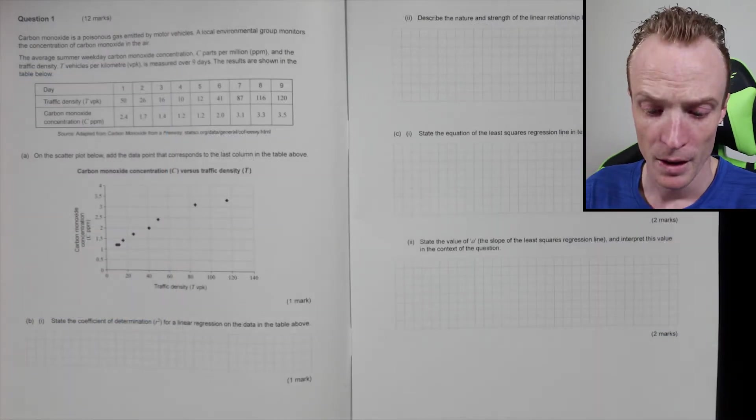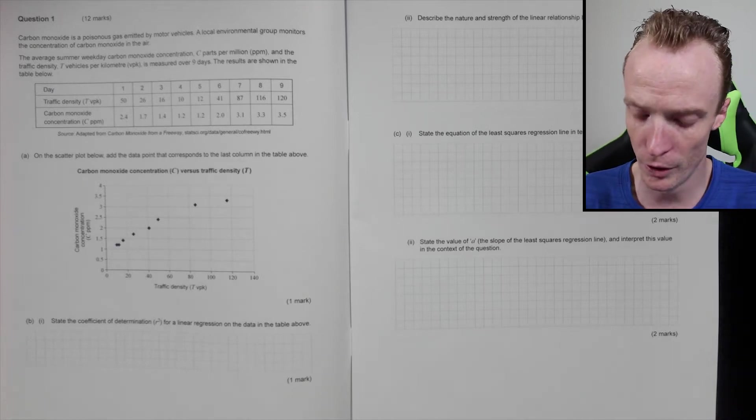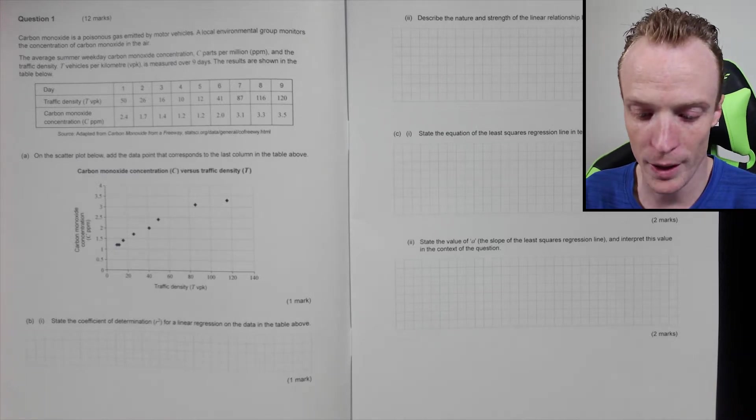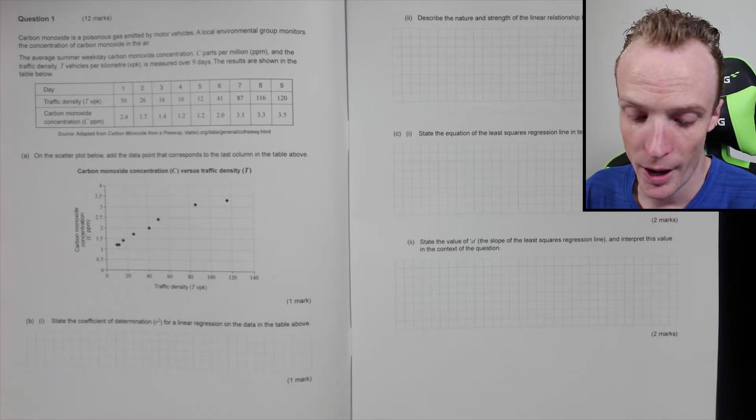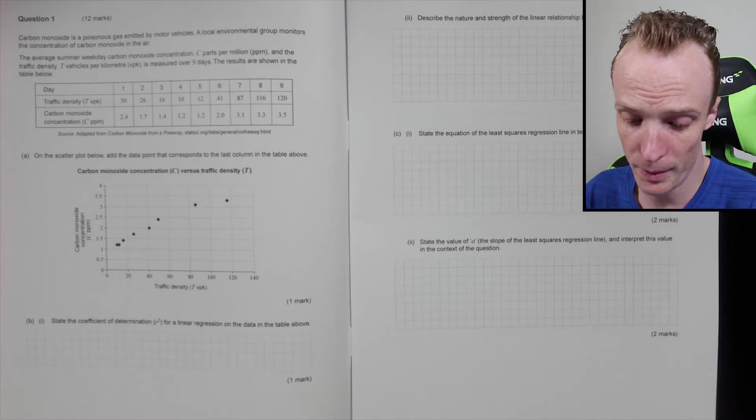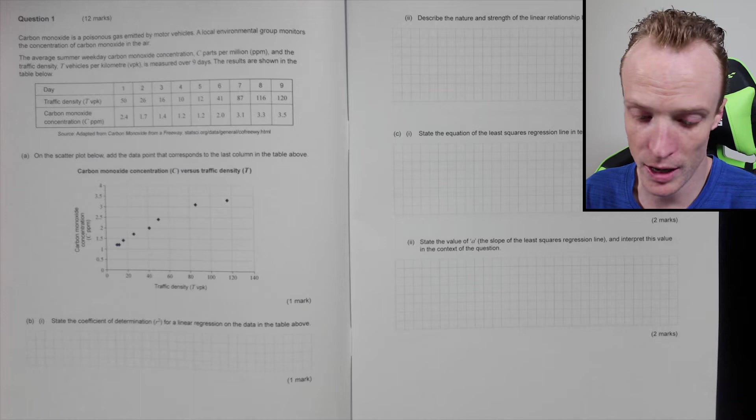Okay, so question one: carbon monoxide is a poisonous gas emitted by motor vehicles. A local environment group monitors the concentration of carbon monoxide in the air. The average summer weekday carbon monoxide concentration C (parts per million) and the traffic density T (vehicles per kilometer) is measured over nine days. The results are shown in the table below.